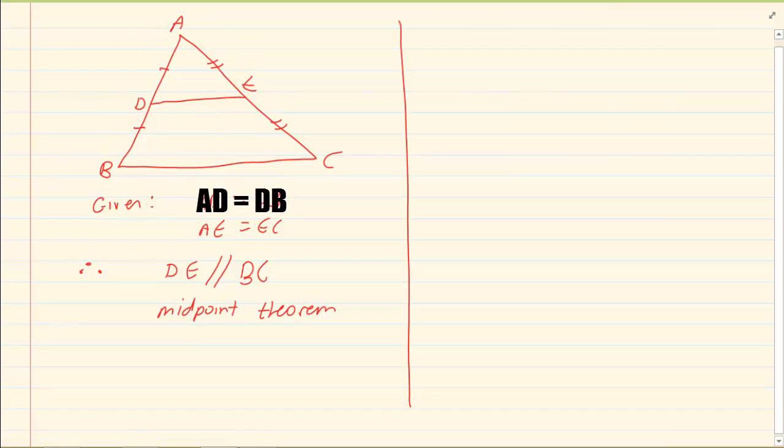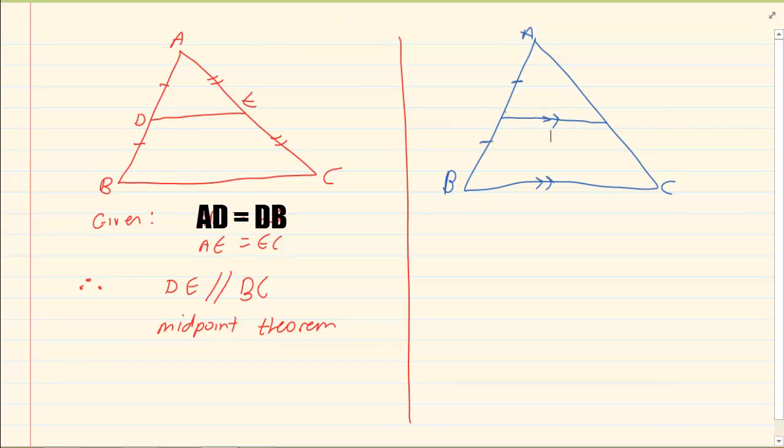Now the second theorem is also a triangle and we also have a line cutting through it. What they give us is that it cuts through the midpoint of one side but it is parallel to the second side. So what is given is that AE is equal to EB and that ED is parallel to BC.